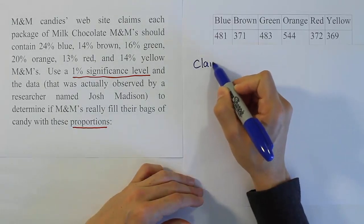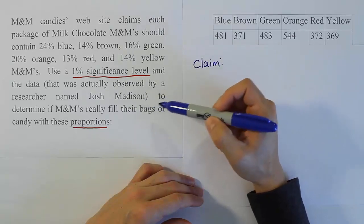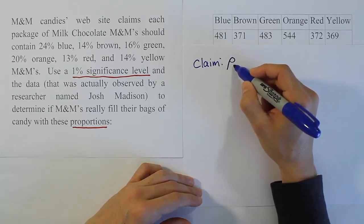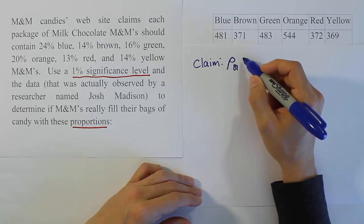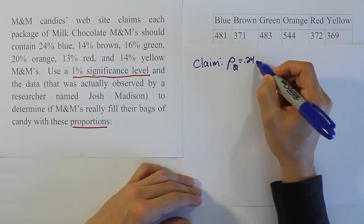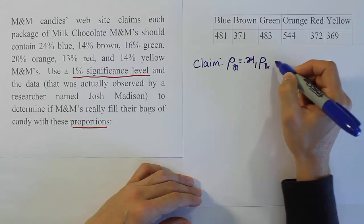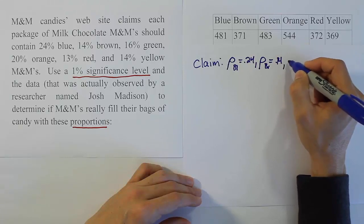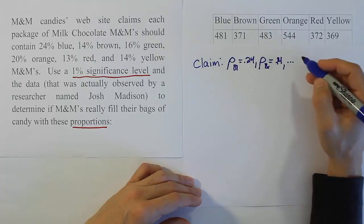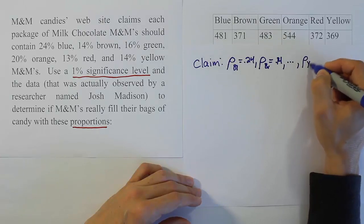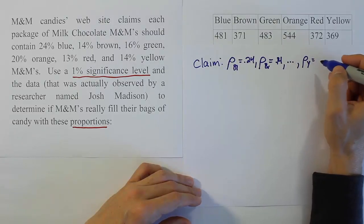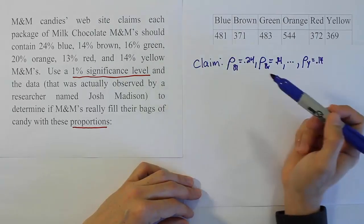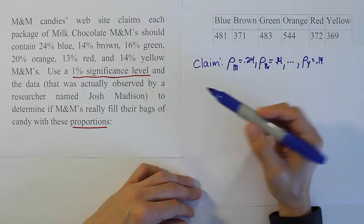The claim for the problem is that we want to test if they really fill their bags with the proportions mentioned above. That means the proportion of blue equals 0.24, proportion of brown equals 0.14, and so on through proportion of yellow equals 0.14. I'm not going to write it all out since it's over there.